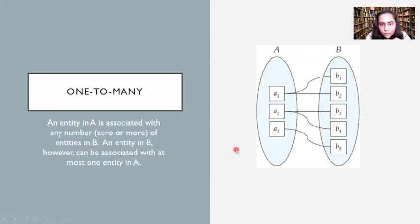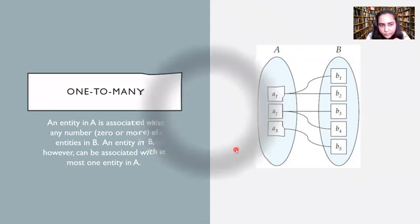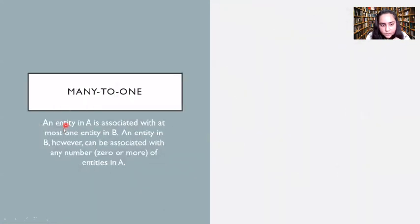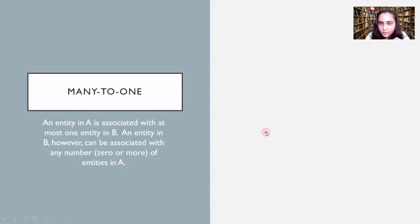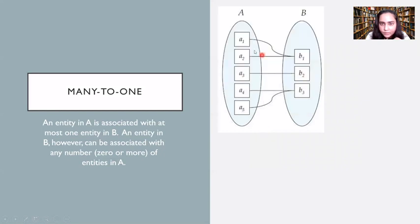The opposite of this is a many-to-one relationship, where an entity in A is associated with at most one entity in B, and an entity in B can be associated with any number — zero or more — of entities in A. The diagram is just the opposite of what we saw in one-to-many.